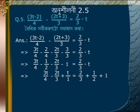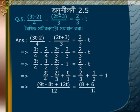Expanding and combining: (9t minus 8t plus 12t)/12 is equal to (8 plus 6 plus 12)/12. Multiplying both sides by 12 gives 13t is equal to 26.